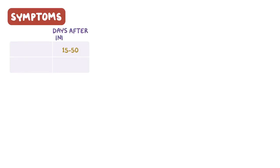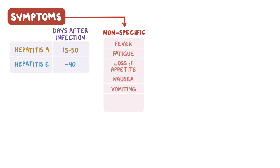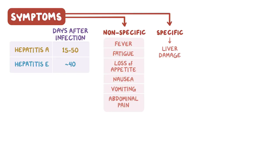Symptoms of hepatitis usually appear 15 to 50 days after infection with the hepatitis A virus and around 40 days for hepatitis E. Nonspecific symptoms include fever, fatigue, loss of appetite, nausea, vomiting, and abdominal pain.